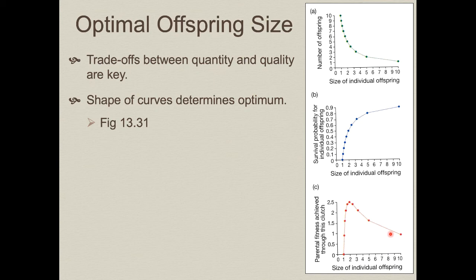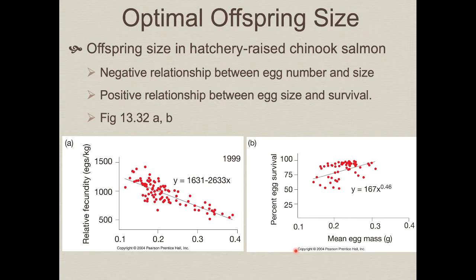A specific example of offspring size evolution is Chinook salmon raised in hatcheries alongside wild populations. Hatchery data show the expected negative relationship between egg number and egg size — larger eggs mean fewer produced. This is fecundity. What about survival? The bigger you are, the greater the survivorship; the smaller you are, the less likely you survive. These are counterbalancing forces: a negative slope for fecundity and a positive slope for survival, pointing toward some intermediate egg size as optimal.